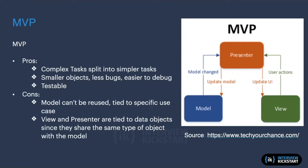For example, if the user says they want to see the event details, the presenter asks the model for the event detail. The model provides it, the presenter starts the new activity with that data, and the view simply shows the data.